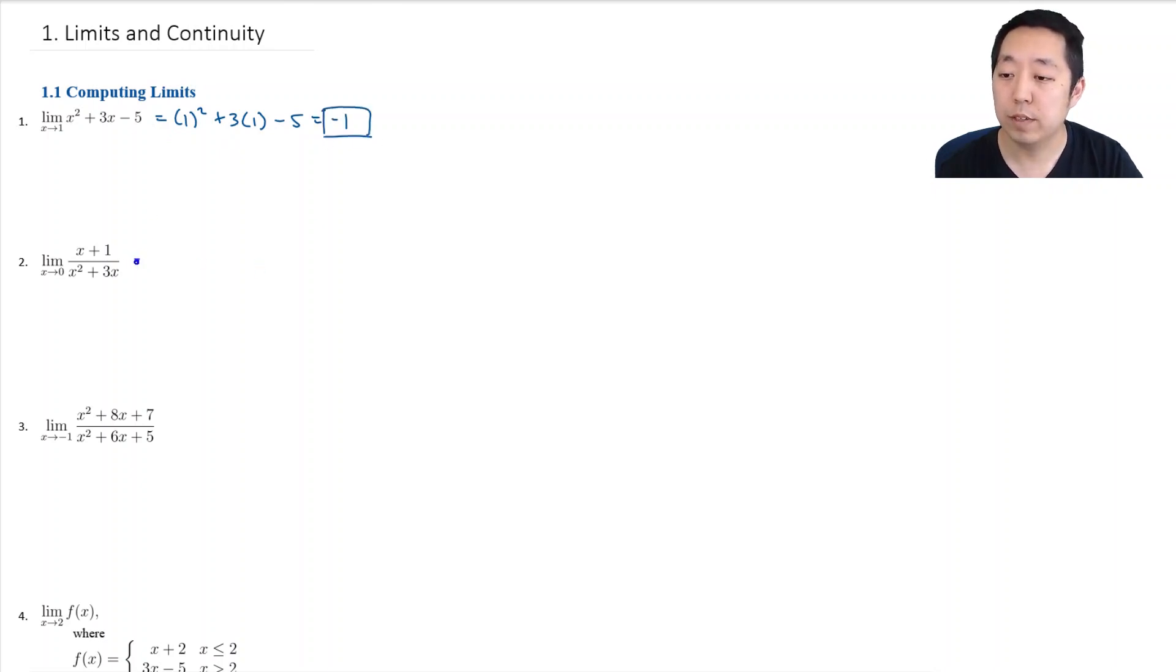And for this one, I'm also going to try plugging in 0. And what I'm going to get is 0 plus 1 over 0 squared plus 3 times 0. And I'm going to get 1 over 0. Now this is not defined. So our general answer is it does not exist.